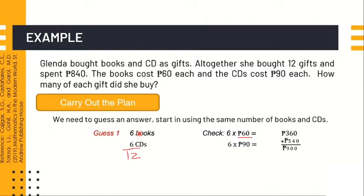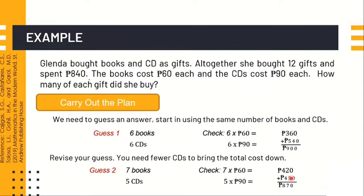If 6 CDs, then 6 times 90 is 540 pesos. Adding the two: 360 pesos plus 540 pesos gives 900 pesos total. But Glenda spent 840 pesos, so Guess 1 is wrong. We need to revise the guess — we need fewer CDs to bring the total cost down. Let's try to lower the 6 CDs.